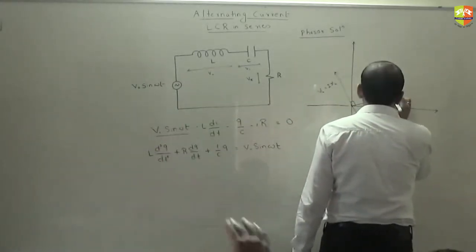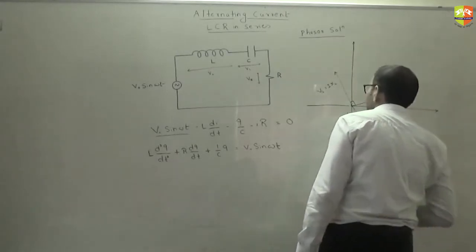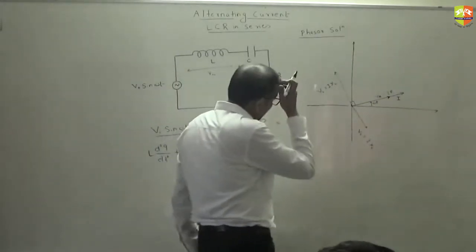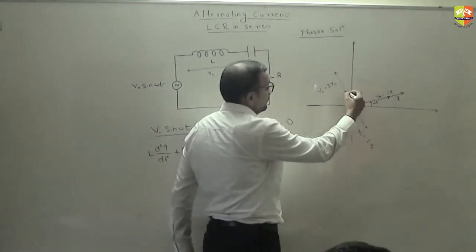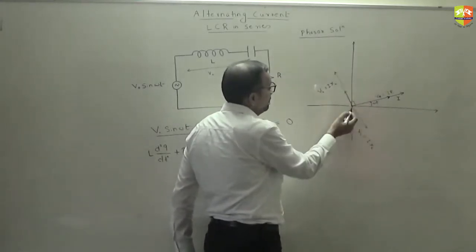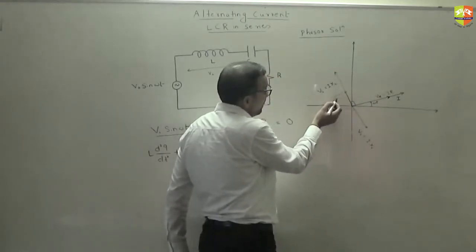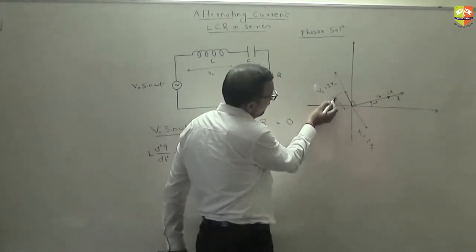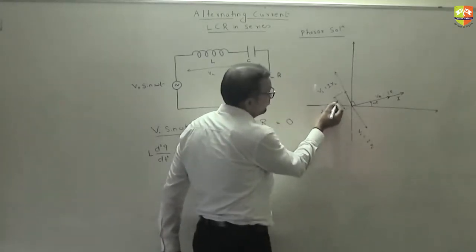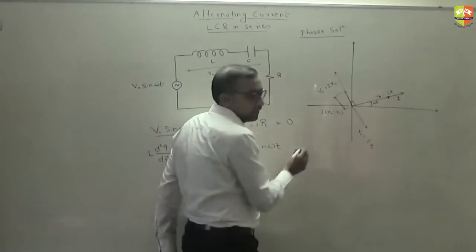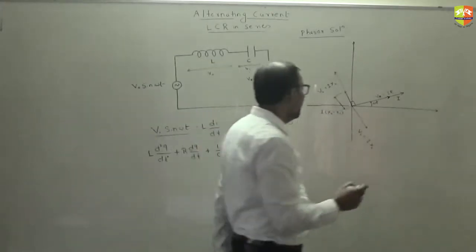VR is I into R. First, you add these two vectors. What will become? It will become this vector whose magnitude will be I times XL minus XC. This magnitude.